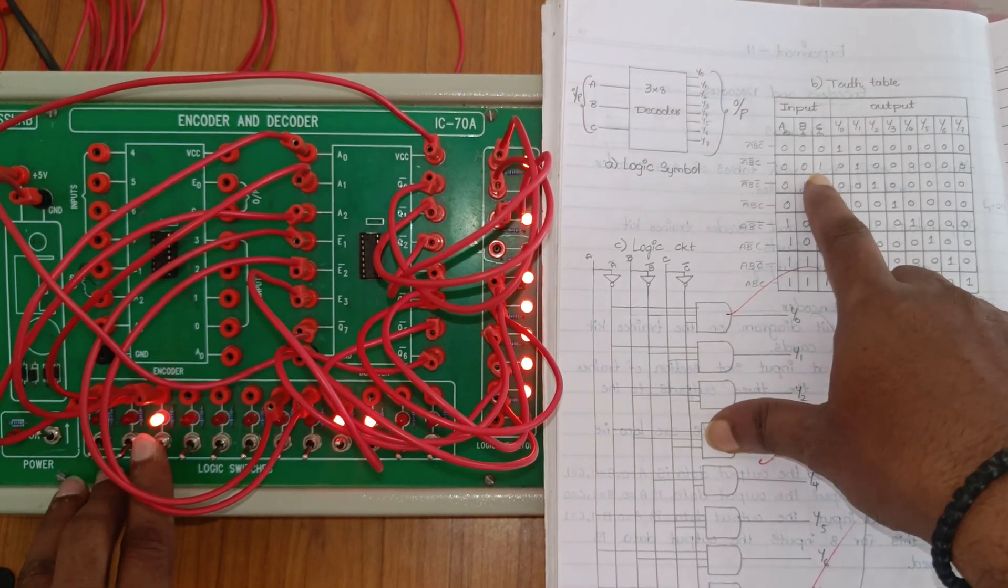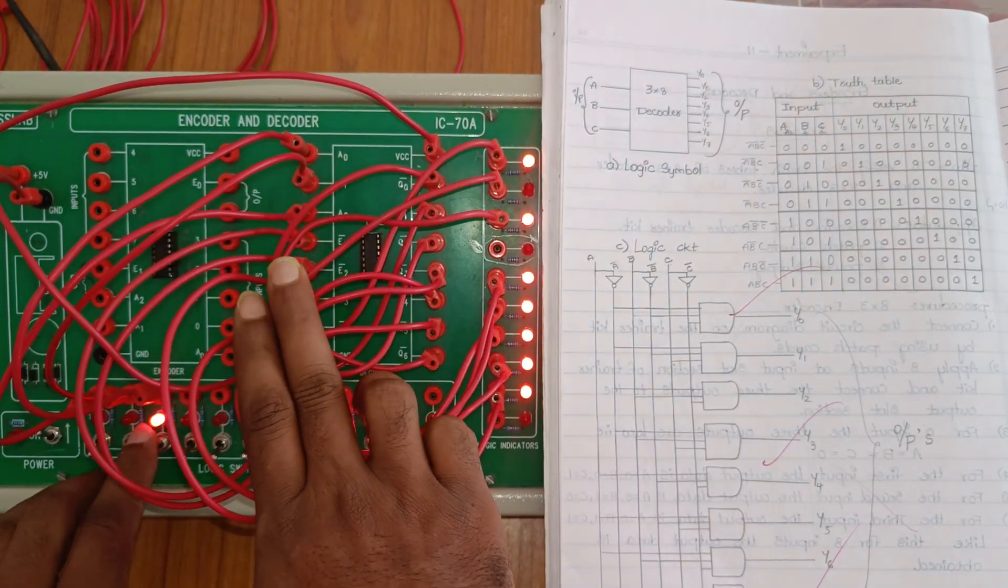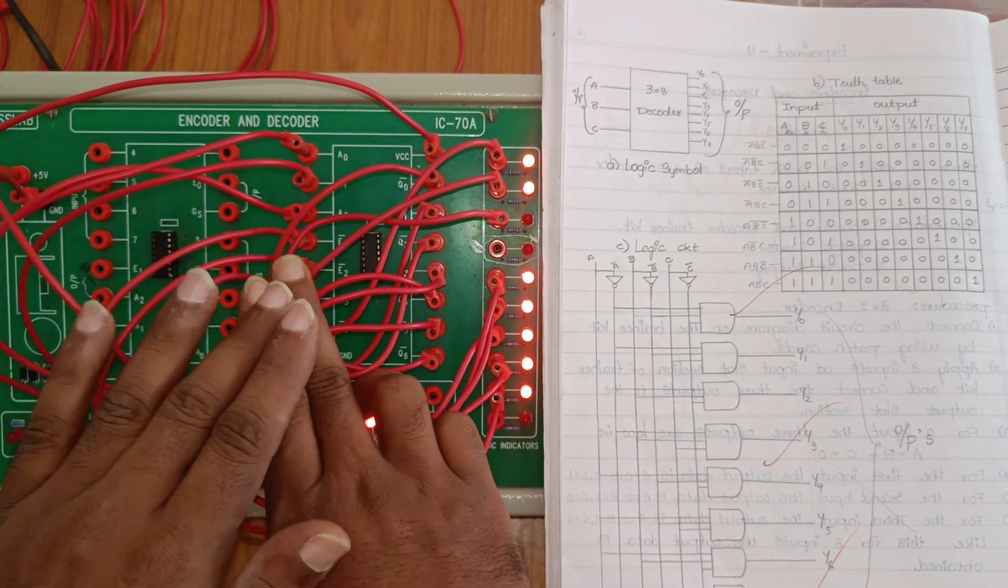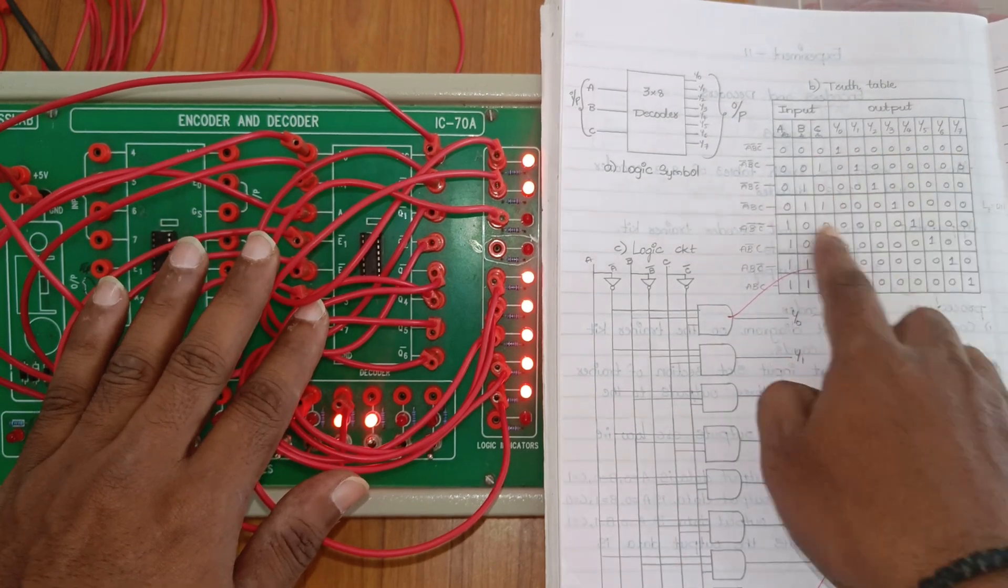We apply 001 - only Y1 data changes. When we apply 010, only Y2 data changes. The remaining bits are constant.